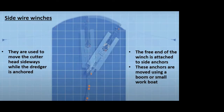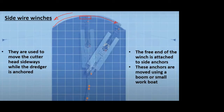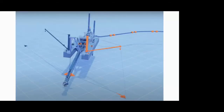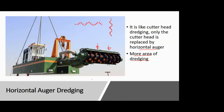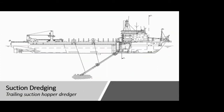The advantage of using a horizontal auger is that at a particular point of time you dredge more area. In cutter head dredging, you had to rotate or move the cutter head in a particular direction to continue dredging. But with a horizontal auger, obviously more area is dredged at the same time, so the dredging process requires less time to complete a given target area. That is the only key difference between cutter head and horizontal auger dredging.